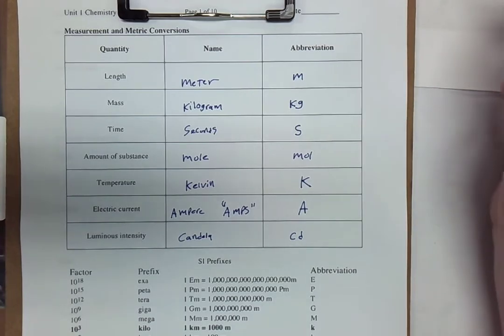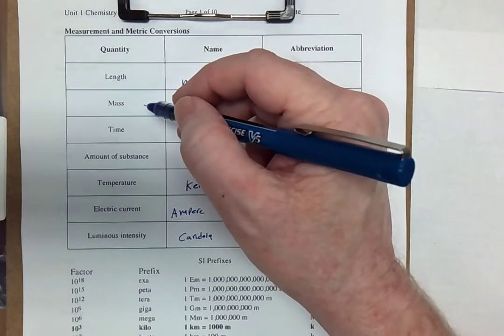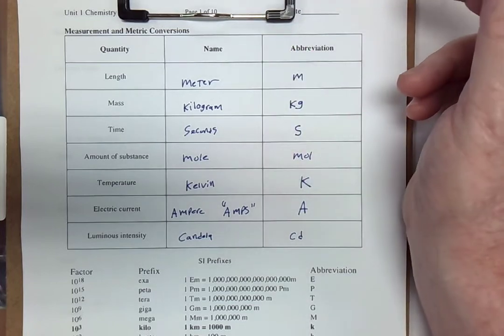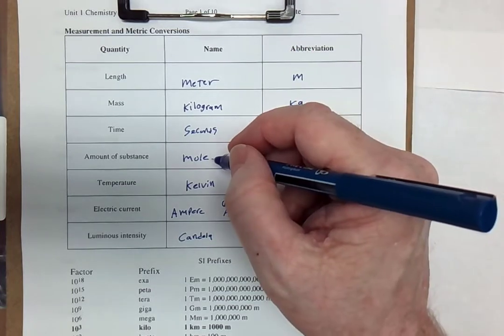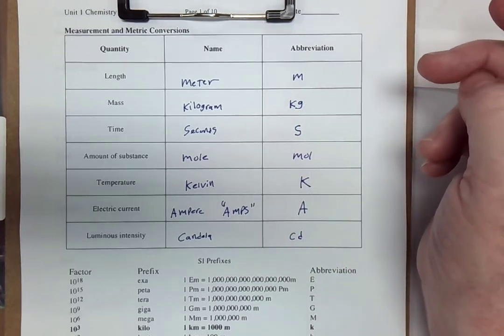Now, for the purposes of Unit 1, we're going to measure length, mass, and time. We'll work with meter, kilogram, and seconds a lot. We won't be looking at the rest of these until later units throughout the year.